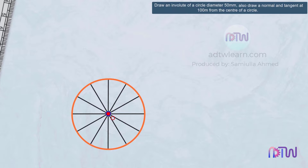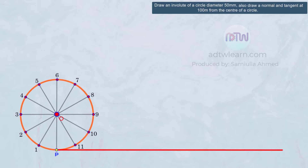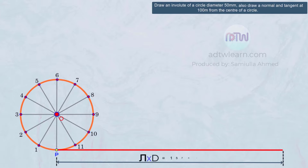Since we divided the circle into 12 parts, we will mark the points on the circumference of the circle: first point, second point, third, and so on up to the 12th point. Mark an initial point and name this point as P. Extend a line horizontally from this P point. This line will be our reference line, whose length will be equal to the circumference of the circle, which will be pi times d in length.